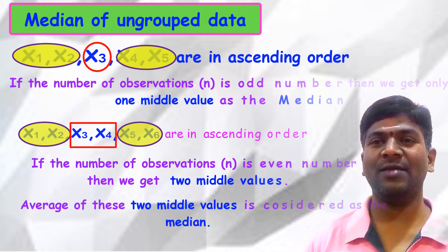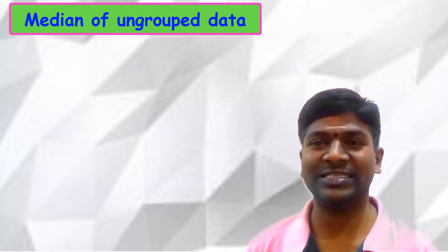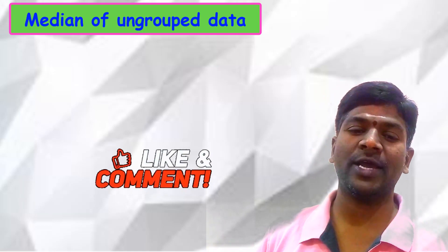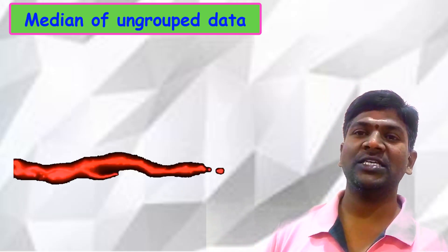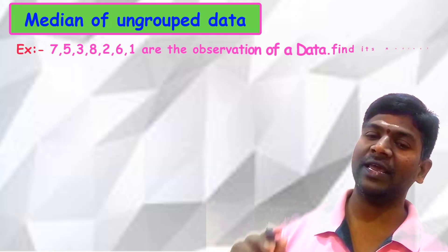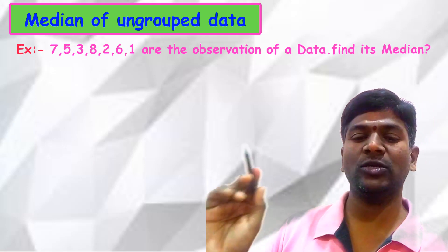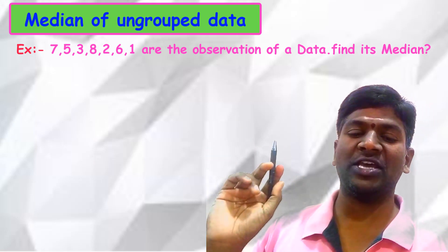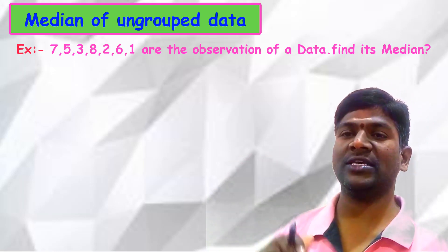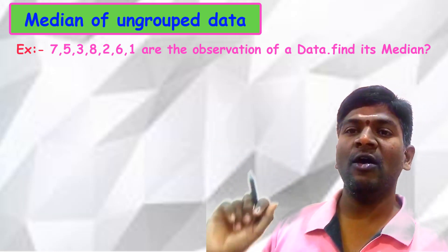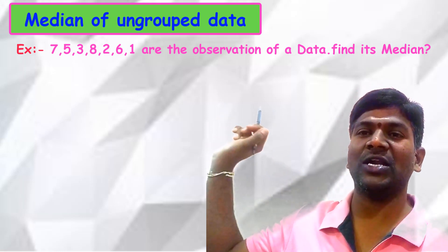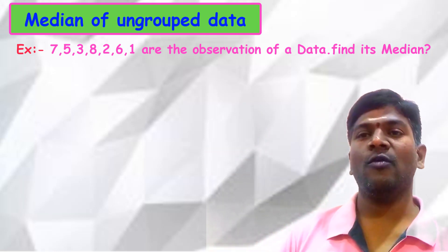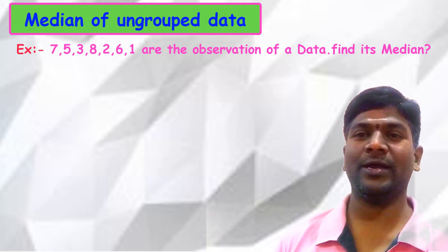Let us understand this with an example. The observations are: 7, 5, 3, 8, 2, 6, 1. These are seven observations. Find the median of this ungrouped data.